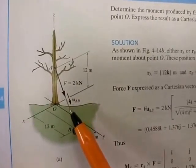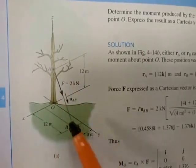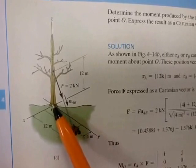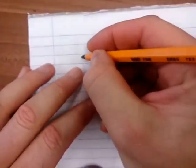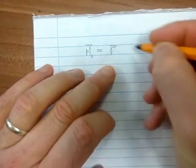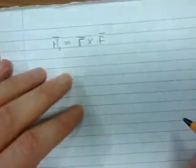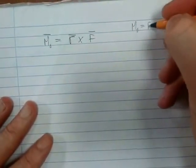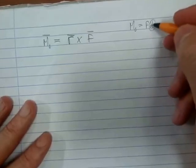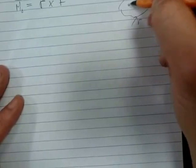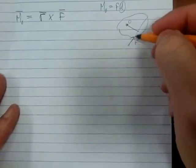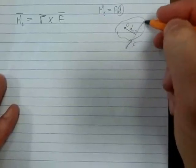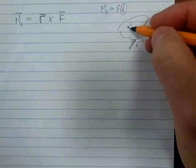We have a three-dimensional problem with x, y, z axes. We have a force and point O, and we need to determine the moment caused by this force. In three-dimensional space, Mo is equal to position vector r cross F. In two-dimensional space we would use F times d, where d is the perpendicular distance from point O to the line of action of F.